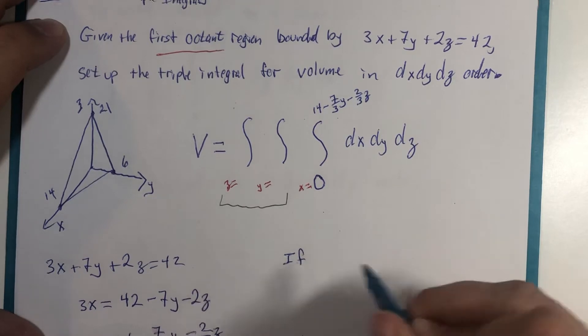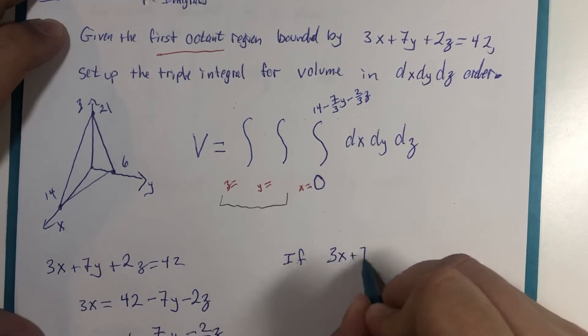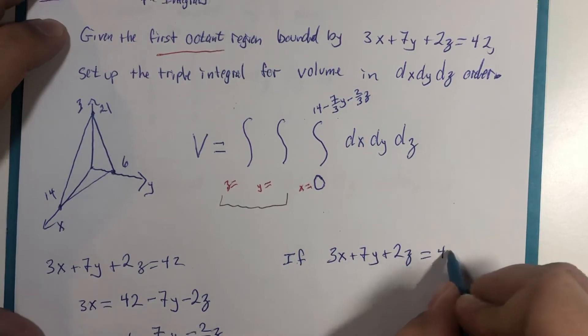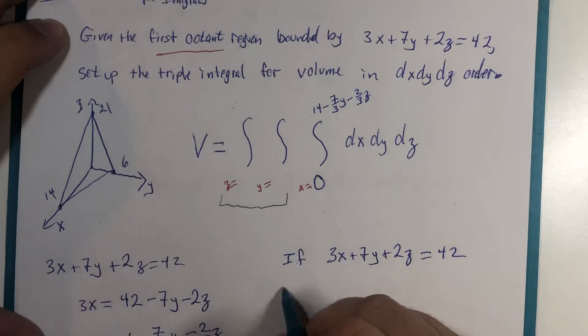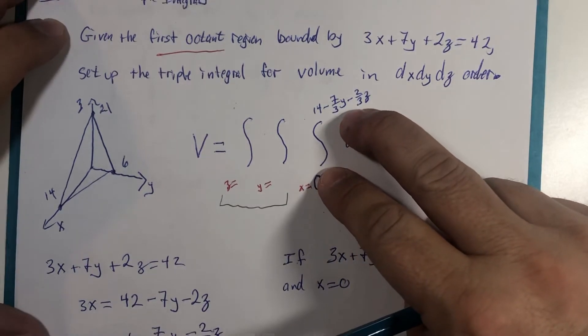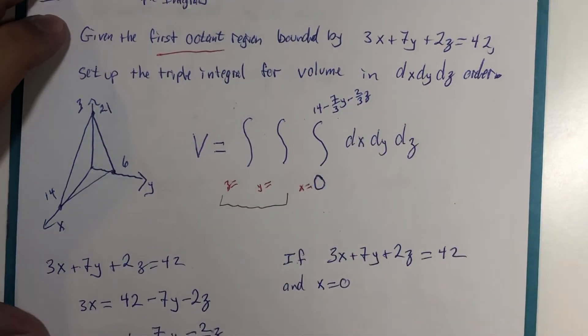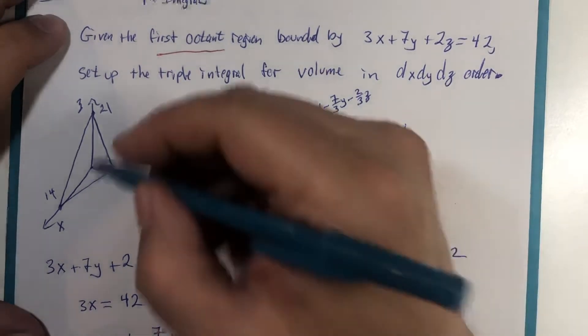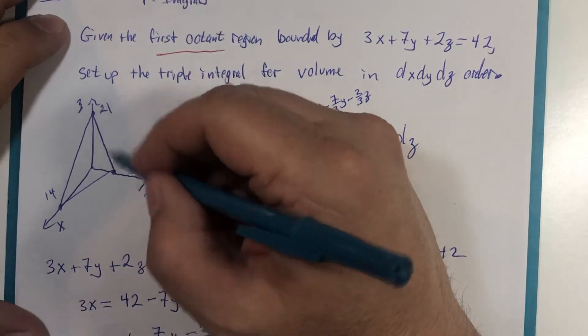Now if we have this equation of the plane and we now let x equal 0 because we have accomplished this third dimension equation, we would be left with 7y plus 2z is 42. This is the equation of that line that is in the yz plane.